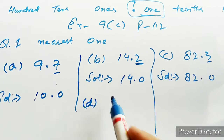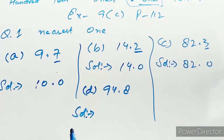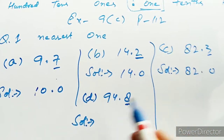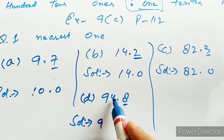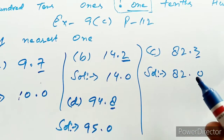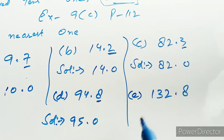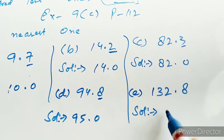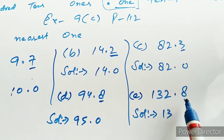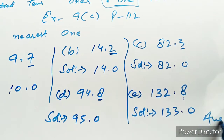D part में 94.8 है। 8 जो है वो 5 से ऊपर है, तो plus 1 करेंगे — 4 में plus 1 हो जाएगा 5, तो answer है 95.0। E part में 132.8 है — 8 है तो 5 से ज़्यादा है, plus 1 करना पड़ेगा, 2 की जगा 3 हो जाएगा, तो answer है 133.0। यही रहेगा आपका final answer।